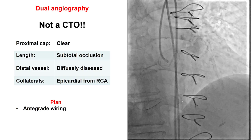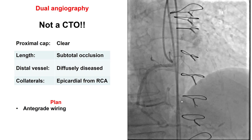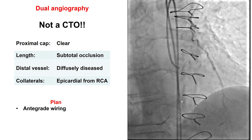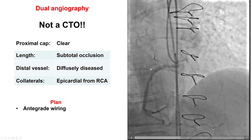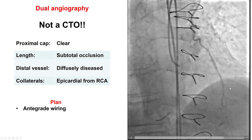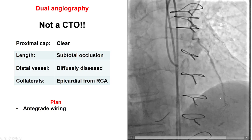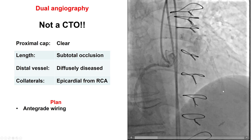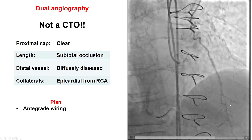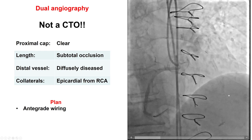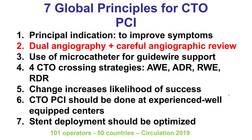The initial referral was for PCI of the LAD CTO. But before undertaking that, the first step is to perform a dual angiogram. Here is a simultaneous injection from the Lima and the native right coronary artery. When we look at the dual injection, it becomes apparent that the patient does not actually have a CTO. Instead, there is a high-grade lesion in the native LAD distal to the Lima touchdown, which is creating competitive flow from the RCA as well as the Lima graft. This is not a CTO, and therefore that makes things much easier and highlights the importance of dual angiography to plan CTO-PCI. In some cases like this one, the patient may not actually have a CTO but may have a high-grade lesion that appears to be a CTO on single injections.